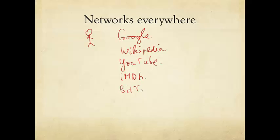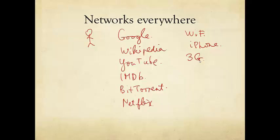You may want to watch the movie on platforms like BitTorrent, or maybe stream it on Netflix. But for some reason, the Wi-Fi logo on your iPhone disappeared, and now you are on the 3G mobile data network. The video quality starts to degrade a little bit. You don't know whether there's something wrong in the cloud, or maybe the internet is getting congested somewhere. In any case, you have to pay $10 for every gigabyte of data consumption on your 3G data plan.